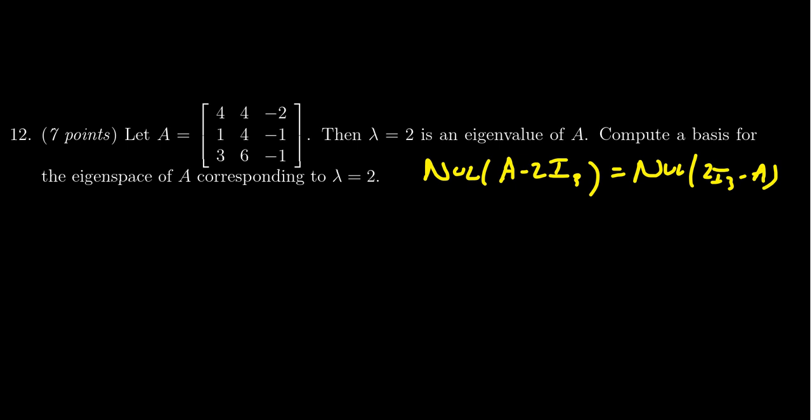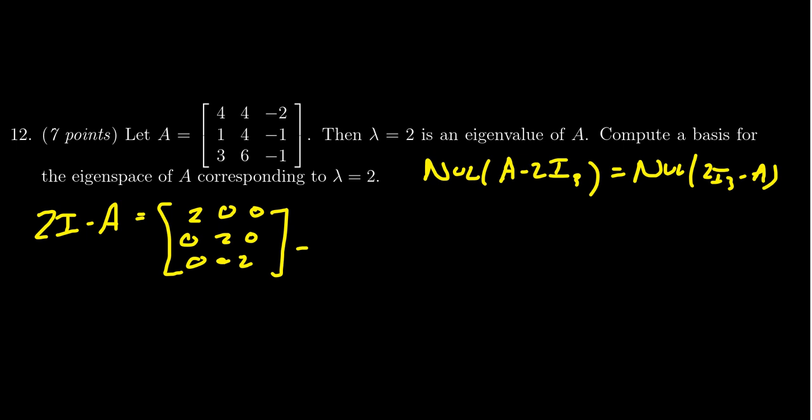So, if I take 2I minus A, what that means is I'm going to take 2 times the identity, so we get 2, 0, 0, 0, 2, 0, 0, 0, 2, and you subtract from it A, which is 4, 4, negative 2, 1, 4, negative 1, 3, 6, negative 1. What you get is the following.